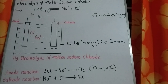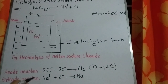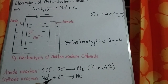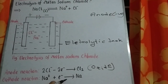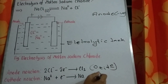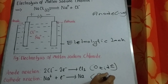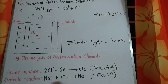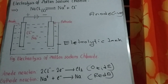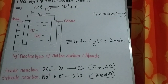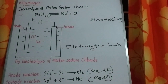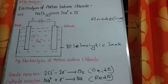As sodium ion is going to the cathode, each sodium ion will receive one electron and produce a sodium atom. This process is known as reduction. This is the mechanism of electrolysis of molten sodium chloride.